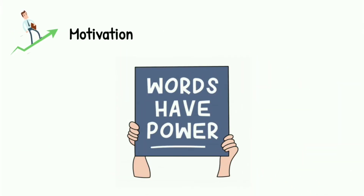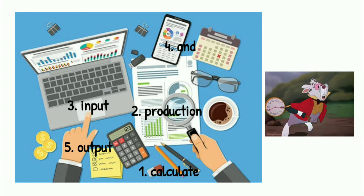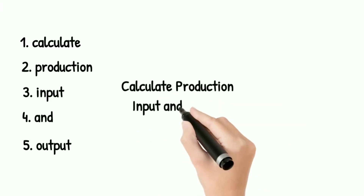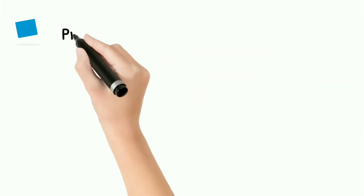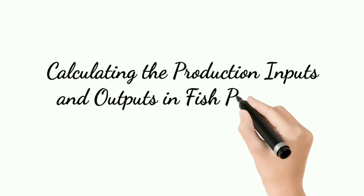Words have power. Find and list down the words found in the picture, then based on their respective numbers, sequentially combine them to create a meaningful idea. You're given 8 seconds. Good job! The words found in the picture are: 1. Calculate, 2. Production, 3. Input, 4. And, 5. Output. If we sequentially combine the words, it will be: calculate production input and output. You now have an idea of the main topic of this video lesson — it is all about calculating the production inputs and outputs in fish processing.